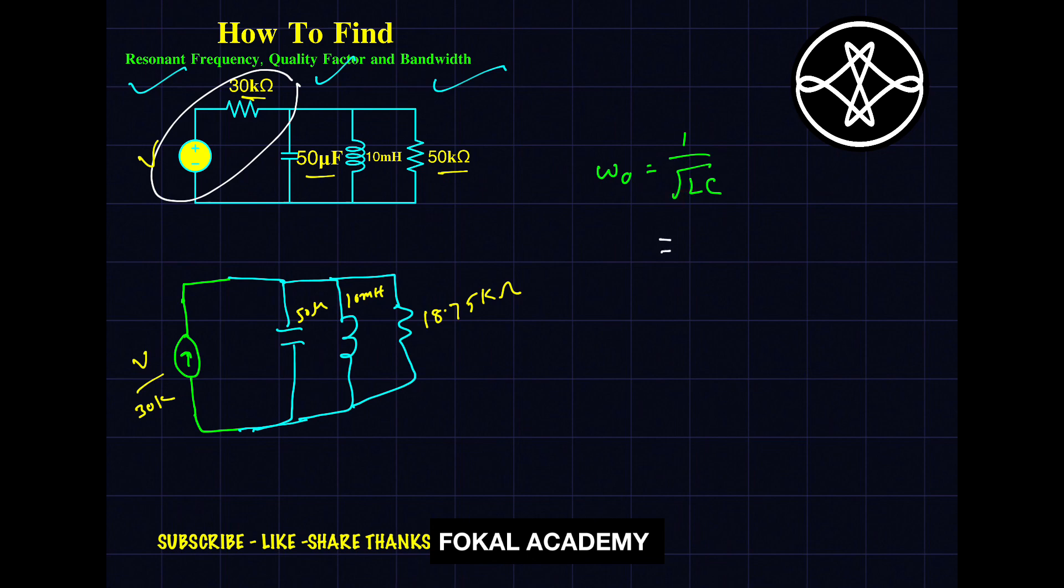Now substitute the values here. That is root of L, 10mH, 10 into milli means 10 power minus 3, into C, which is 50 microfarad. By simplifying this, we will get omega_0 equal to 447.21 radians per second.